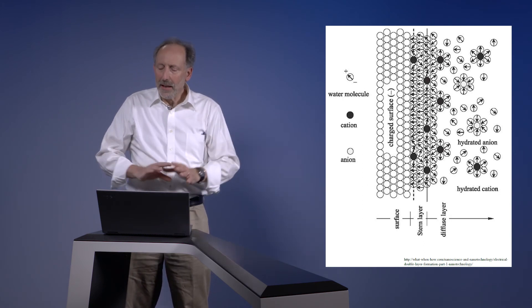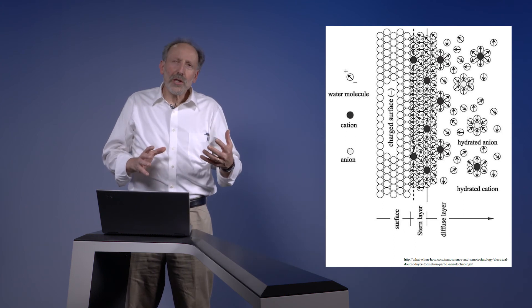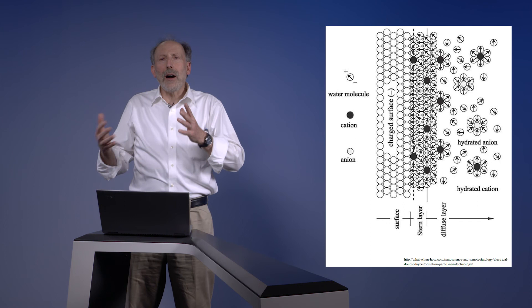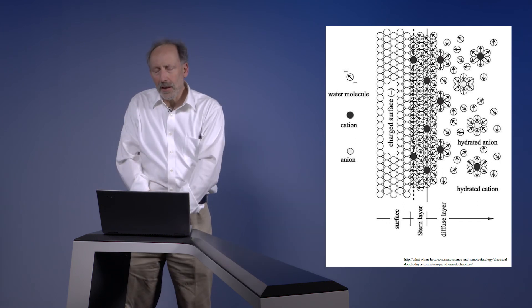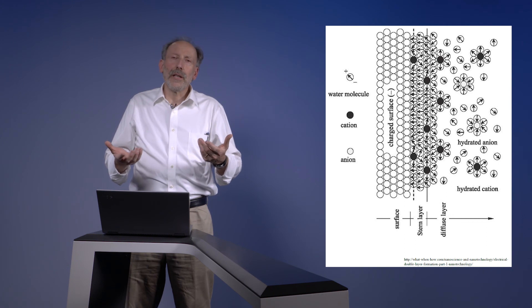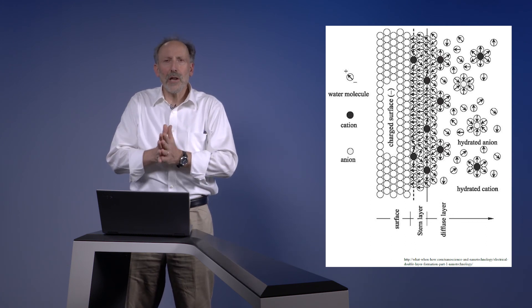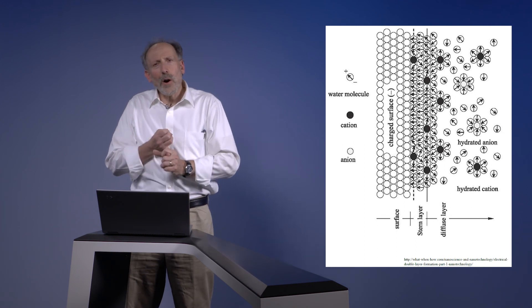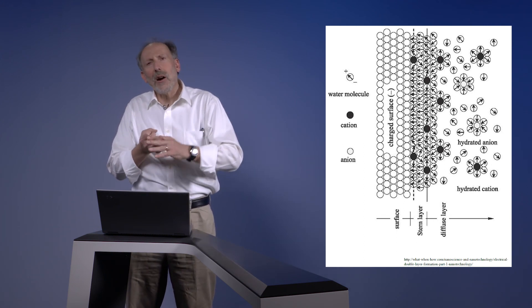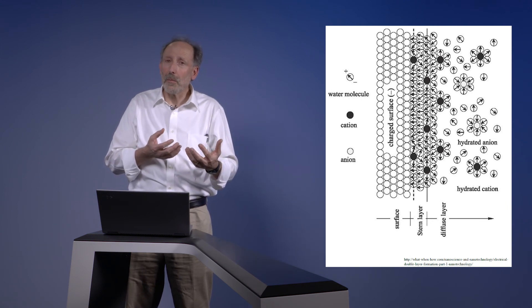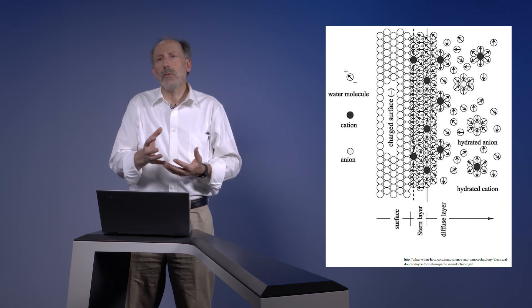So this diffuse system of cations and ions, we often call the boundary layer or the diffuse layer. And taken together, we call it the double layer theory of interfacial processes. And it's very fundamental to how water is absorbed to surfaces and how cations and any associated other charge molecules are affiliated with mineral surfaces.